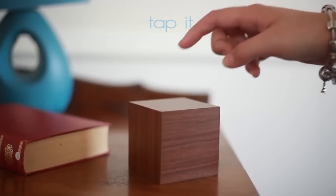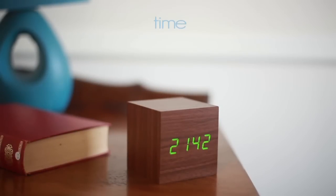You can simply tap on the table for the clock to light up, instantly displaying the time, date and temperature. And when it's quiet again, the display will automatically disappear, as if by magic.